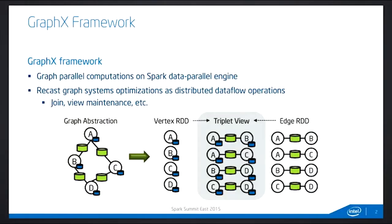Since Anchor already gave a pretty good overview of GraphX, I don't need to spend a lot of time on this. To recap, GraphX provides a graph-parallel framework on top of the Spark data-parallel execution engine, and it actually recasts many of the graph optimizations as distributed data flow operations — for instance, the view, join, and so on. Basically, the user works in the graph abstraction.